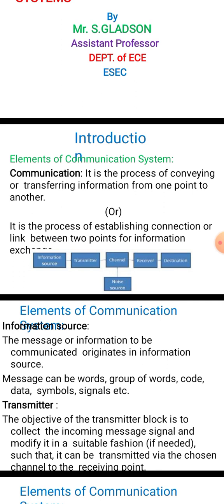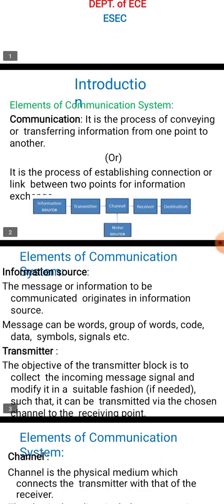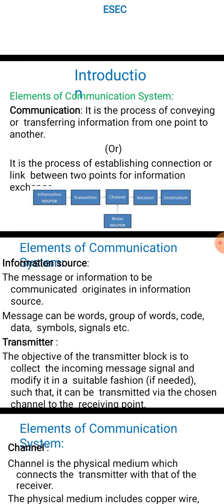The main purpose of an electronic communication system is to transfer information from one place to another — that is, the sharing of information from one place to another. We can summarize the processes involved in communication as transmission, reception, and the processing of information. The information generated at one place is going to be transferred to many locations using electronic circuits.